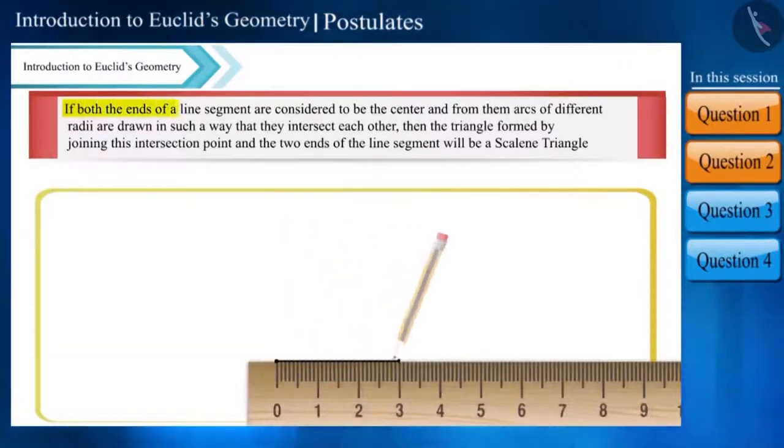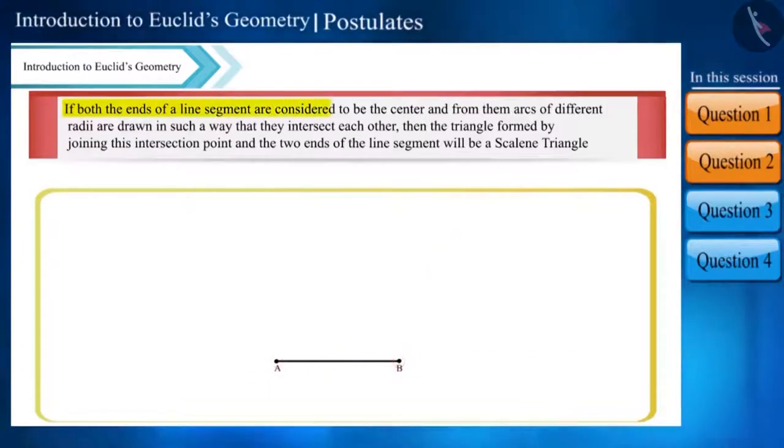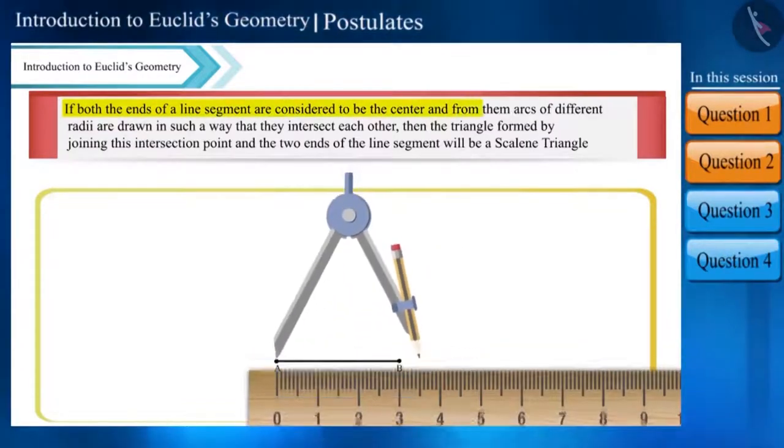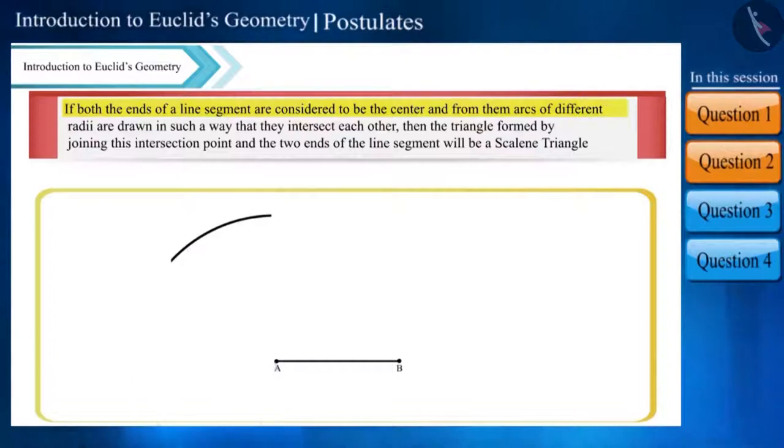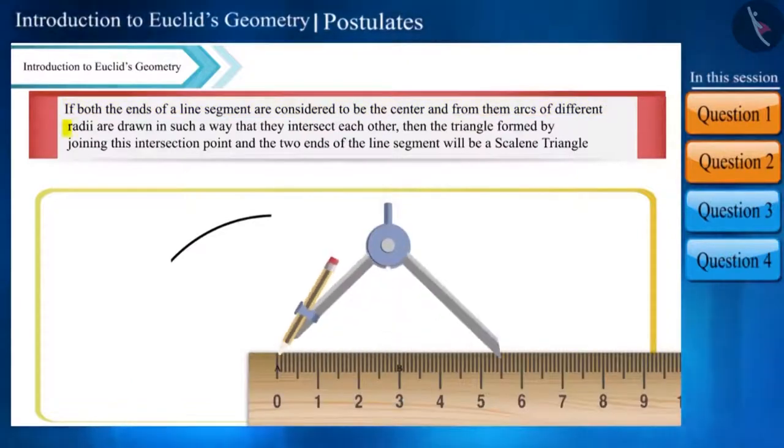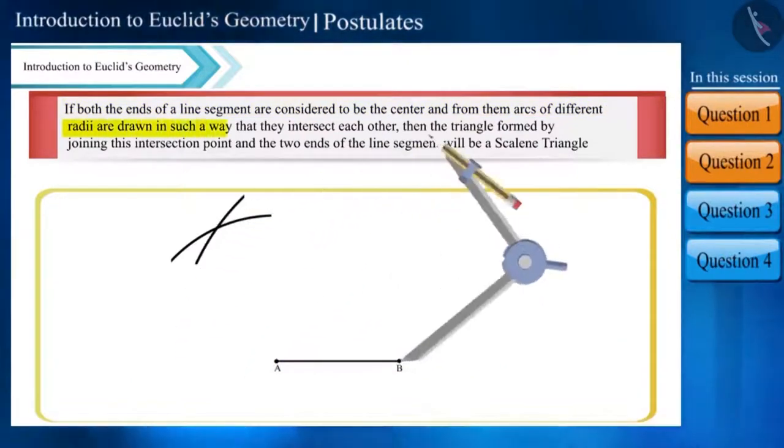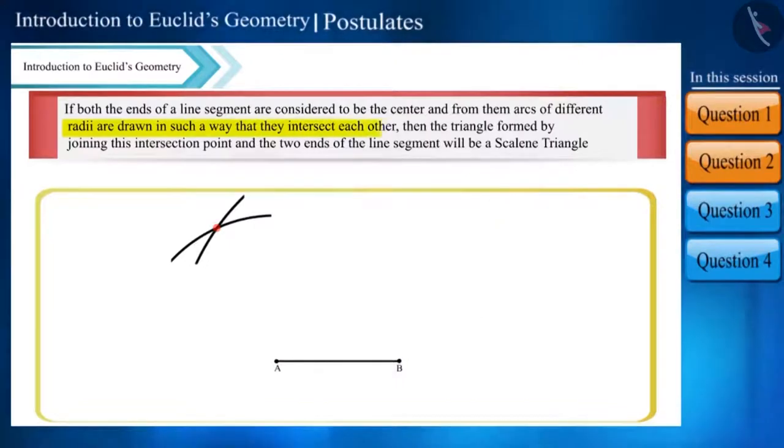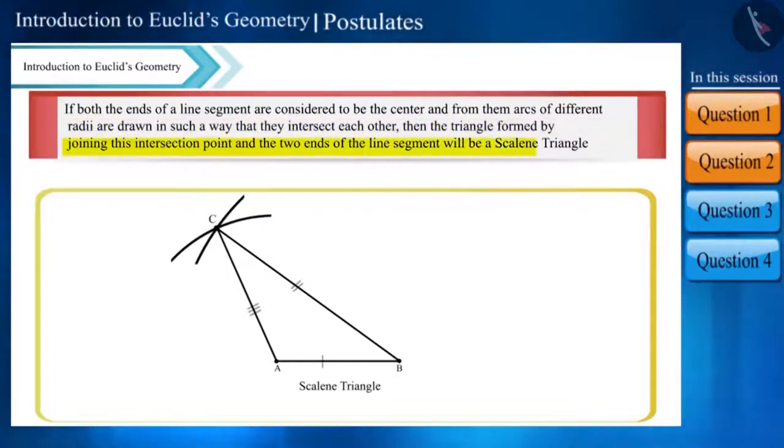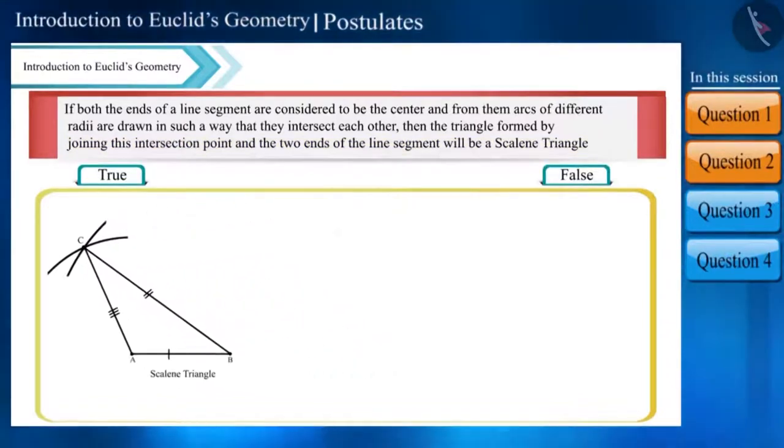If both the ends of a line segment are considered to be the center and from them arcs of different radius are drawn in such a way that they intersect each other, then the triangle formed by joining this intersection point and the two ends of the line segment will be a scalene triangle. Is this statement true?